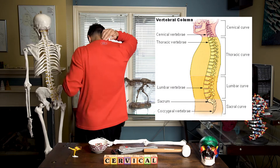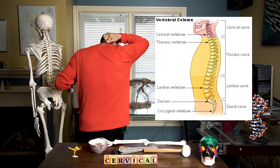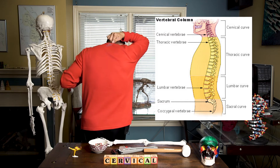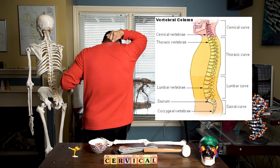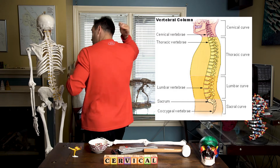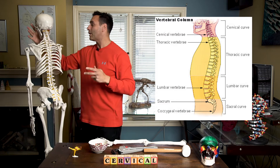On the back of your neck there's usually a big bump back here. This is the seventh cervical vertebra.